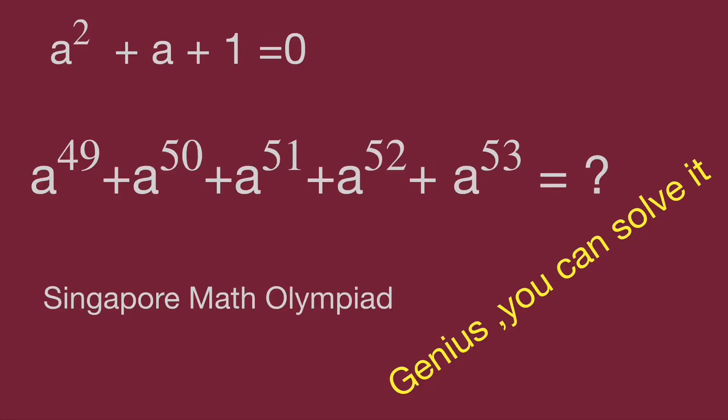Hello, you are watching Bala Hippo Math Genius Riddle. The questions come from Singapore Math Olympiad. We have a squared plus a plus one equal to zero. Then what's the value for a power of 49 plus a power of 50 plus a power of 51 plus a power of 52 plus a power of 53?